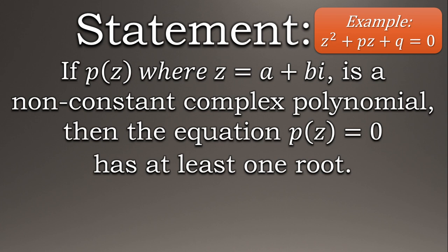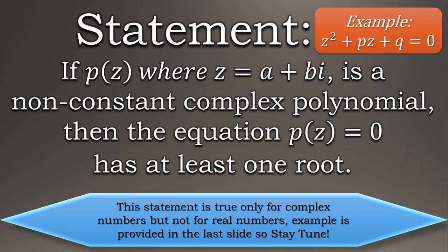Meaning we get at least one value of z for which the non-constant polynomial gets zero. But this statement is true only for complex numbers and not for real ones. You may ask why? So my friend, the answer will be provided in the last slide, so stay tuned for that.